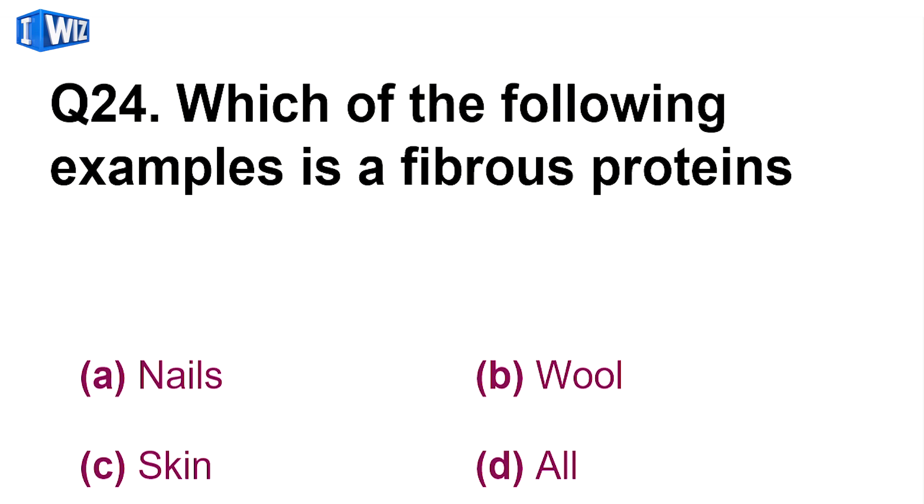Next hai, which of the following example is a fibrous protein - nails, wool, skin. Well yeh sabhi fibrous protein hai. Fibrous protein wo hota hai, joh unbranched hota hai, aur water mein hota hai insoluble, linear, unbranched, water insoluble. So all of them are fibrous proteins.